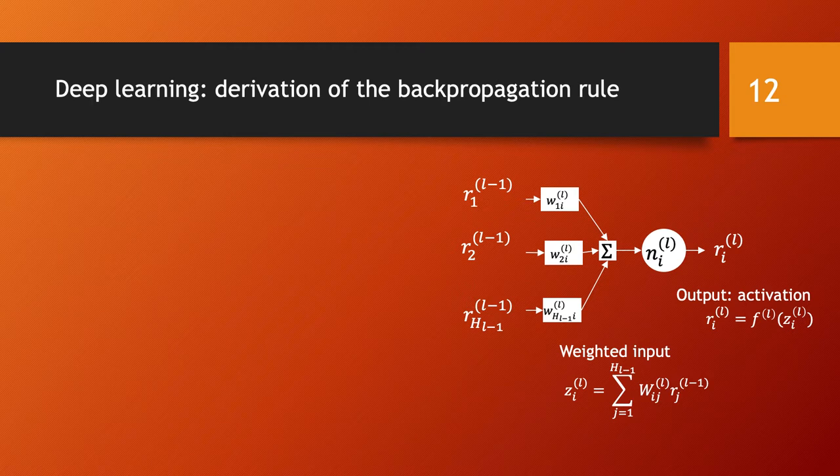The most important step in the training of a deep neural network is the backpropagation rule. This is the rule that indicates how to update the weights in each layer in such a way that you are improving the accuracy of your network. You have a number of data points and you are calculating with forward computation in your deep neural network on those data points.